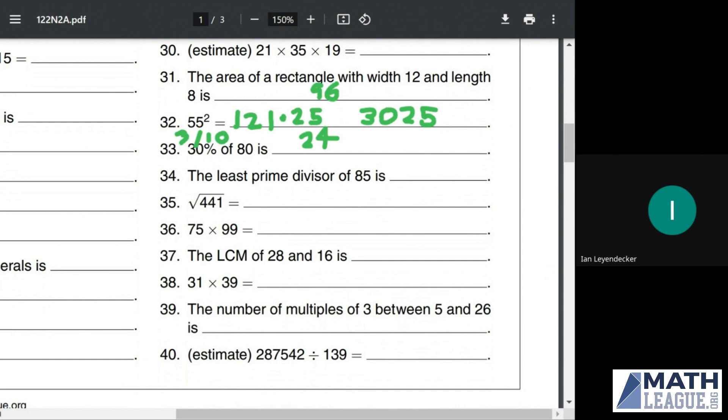The least prime divisor of 85 is blank. Well, it isn't divisible by 2 because it's not even and it isn't divisible by 3 because 8 plus 5 is 13, which isn't divisible by 3, but it is divisible by 5. So the least prime divisor of 85 is 5.